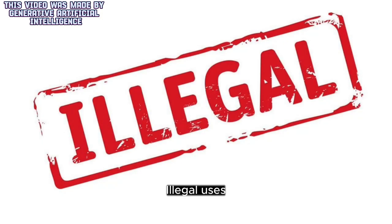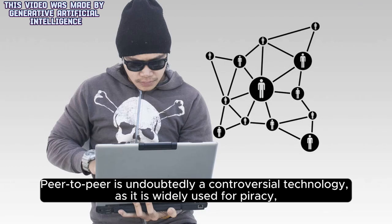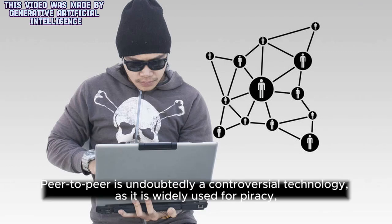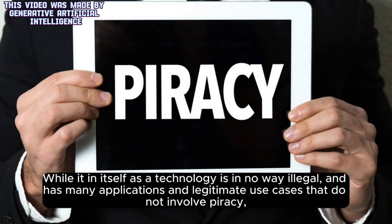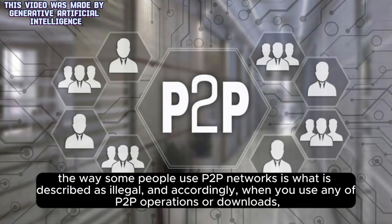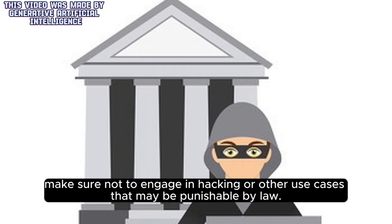Illegal uses: peer-to-peer is undoubtedly a controversial technology, as it is widely used for piracy, with many websites providing suspiciously free access to copyrighted content such as movies, music, software, or games. While P2P as a technology is in no way illegal and has many legitimate use cases that do not involve piracy, the way some people use P2P networks is what is described as illegal. Accordingly, when you use any P2P operations or downloads, make sure not to engage in piracy or other use cases that may be punishable by law.